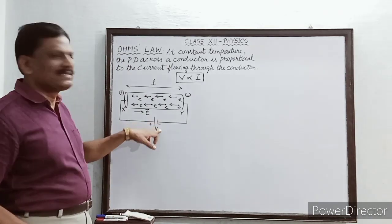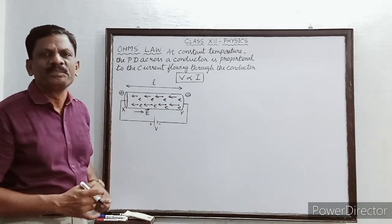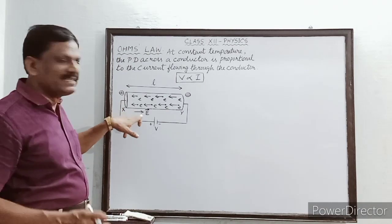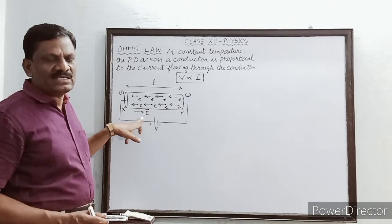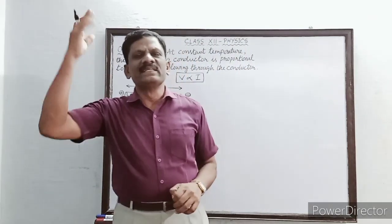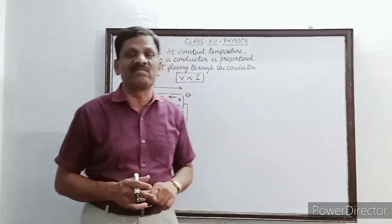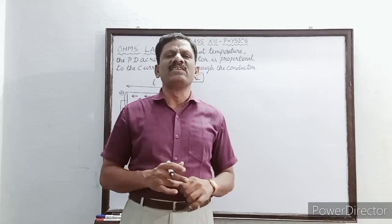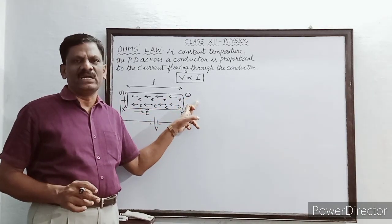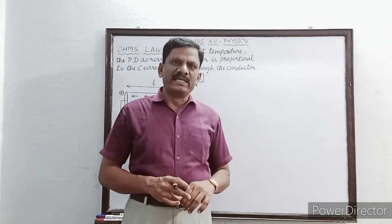Because of the applied potential difference, the free electrons flow from the negative potential towards the positive potential — opposite to the direction of the electric field — constituting an electron current. Since by convention it was assumed that positive charges flow through a conductor, the conventional current is the flow of positive charges from positive potential towards negative potential.